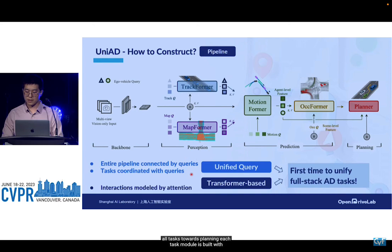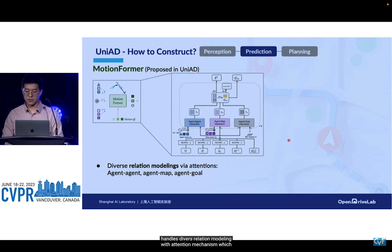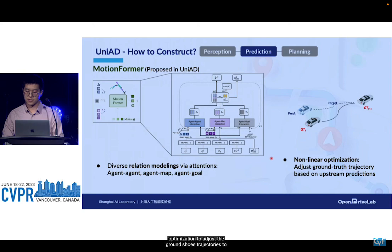Each task module is built with transformers to model complex interactions in driving scenes via attention mechanisms. For the first time, we unify full-stack autonomous driving tasks in one end-to-end framework. TrackFormer and MapFormer are developed from previous research — we treat agents and map elements as queries to leverage their ability for end-to-end training. The MotionFormer handles diverse relation modeling with attention mechanisms covering agent-agent, agent-map, and agent-goal relations. We adopt a nonlinear optimization to adjust ground-truth trajectories to recover errors from upstream predictions.